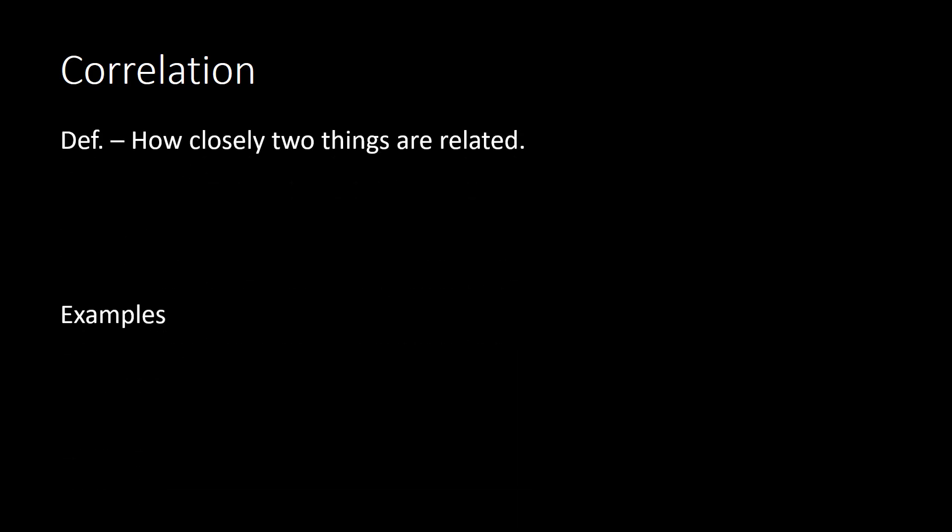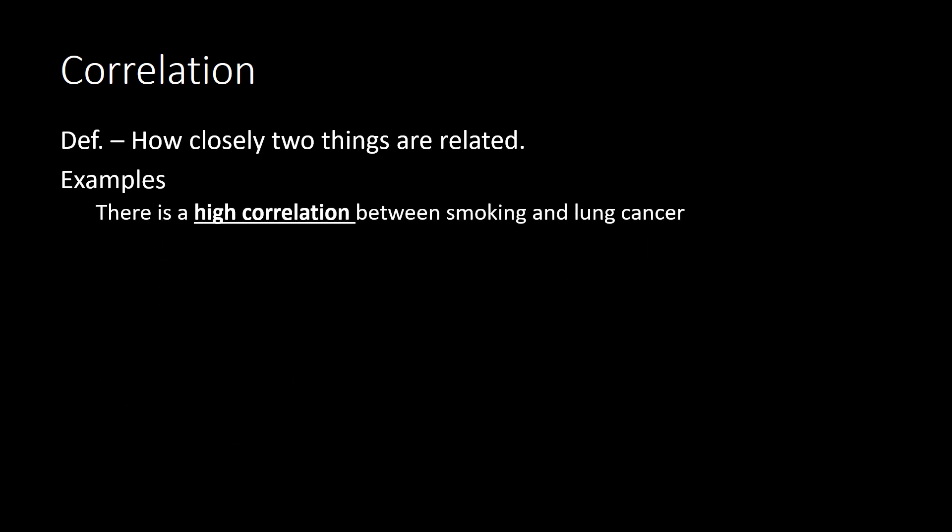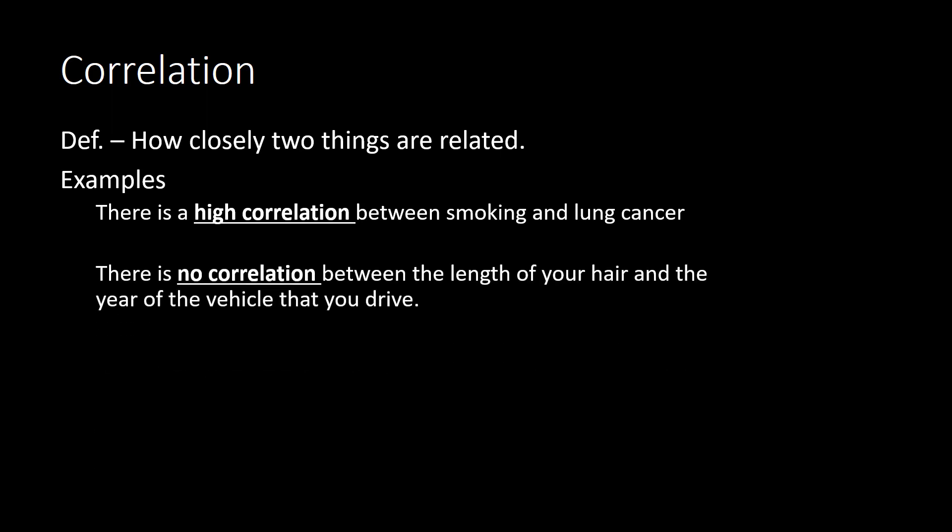We also have what's called correlation. Correlation shows the relationship between those points in the graph, or more simply put, it shows how closely two things are related. For example, there may be a high correlation between smoking and lung cancer — the more you smoke, the better chance you have of getting lung cancer. However, there would be no correlation between the length of your hair and the year of the vehicle that you drive, because there's no relationship between those two things.